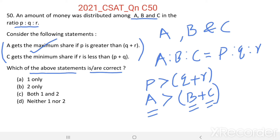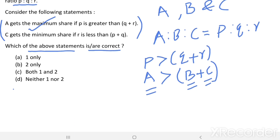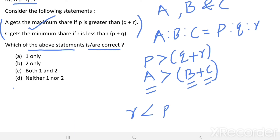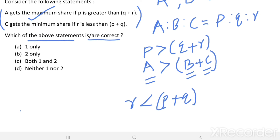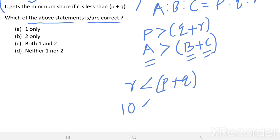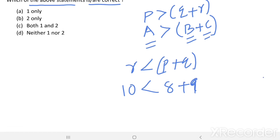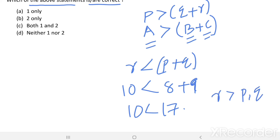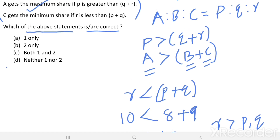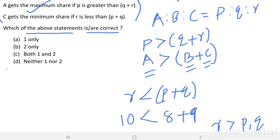Now see statement 2: C gets the minimum share if R is less than P plus Q. Suppose R equals 10, which is less than P equals 8 and Q equals 9. Then 10 is less than 17, so R is less than P plus Q, but still R is greater than P and Q individually. Therefore, we cannot conclude C gets minimum share if R is less than P plus Q. Statement 2 is incorrect.